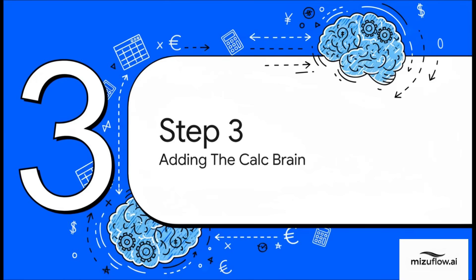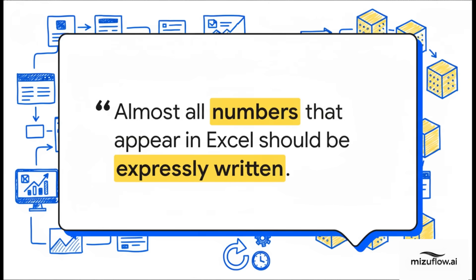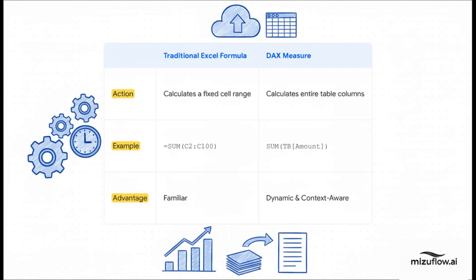Our data engine is built. Now it's time for step three — giving this thing a brain, adding the calculation logic. It's a whole new way of thinking. Instead of putting a formula in cell F5 that adds up some other cells, we're going to explicitly write out our calculations as reusable formulas called measures. They live inside the data model, not on the worksheet. In traditional Excel, you're always thinking about cells — your formula is something like =SUM(C2:C100), locked to that specific range. But with a DAX measure, you stop thinking about cells and start thinking about whole columns. You write SUM of TB amount, and that one measure is smart — it knows what filters you've applied, like the month or the account, and gives you the right answer every time. It's dynamic, reusable, and just better.